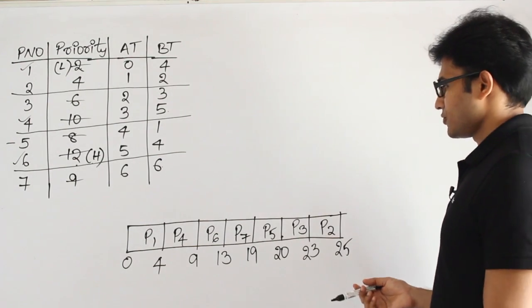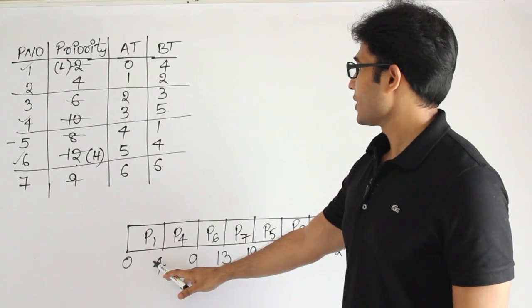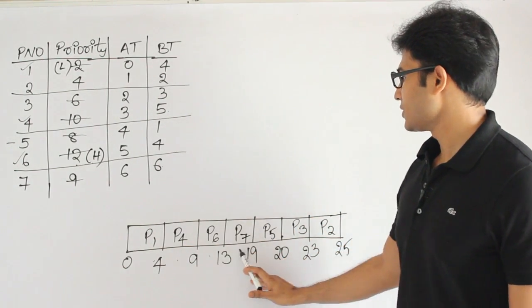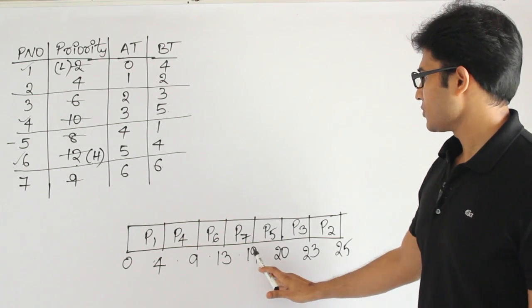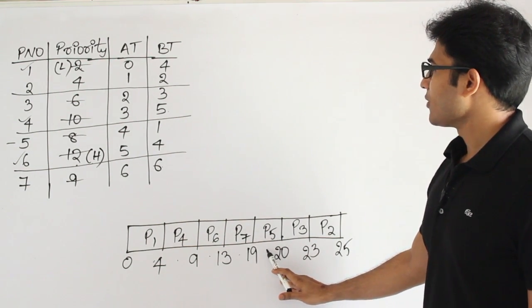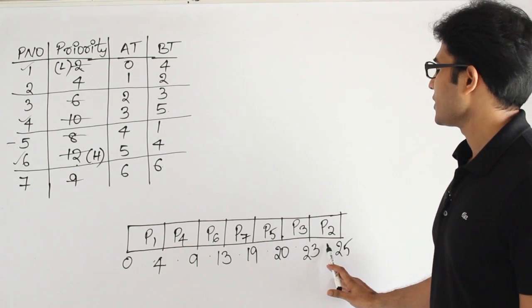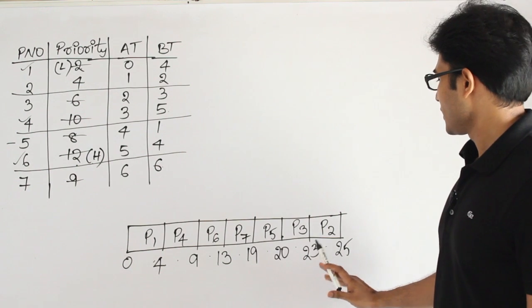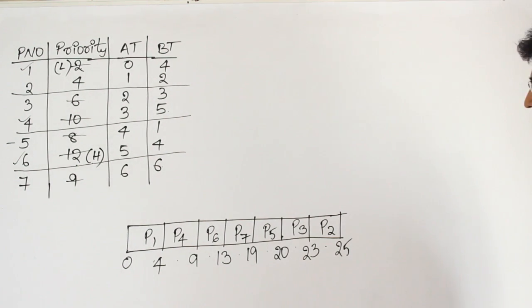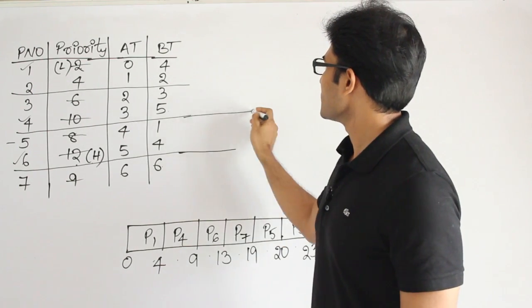You can cross-verify the schedule: P1 burst time is 4, so finishes at 4. P4 burst time is 5, so finishes at 9. P6 burst time is 4, so finishes at 13. P7 burst time is 6, so finishes at 19. P5 burst time is 1, so finishes at 20. P3 burst time is 3, so finishes at 23. P2 burst time is 2, so finishes at 25. This is how we obtain all the completion times.